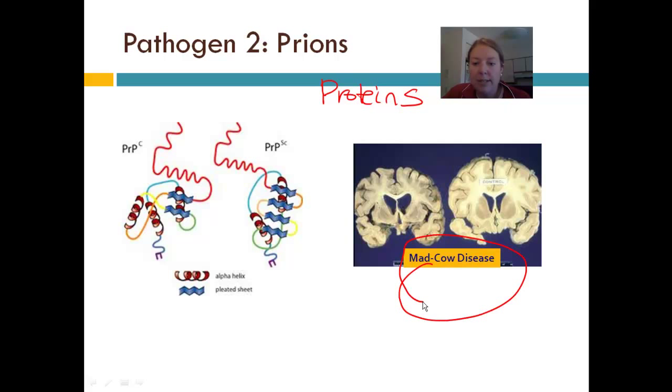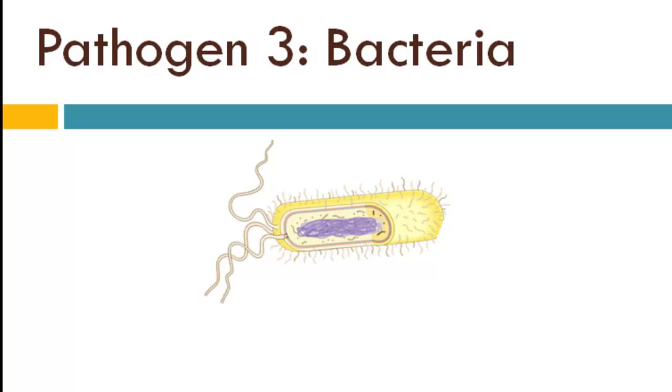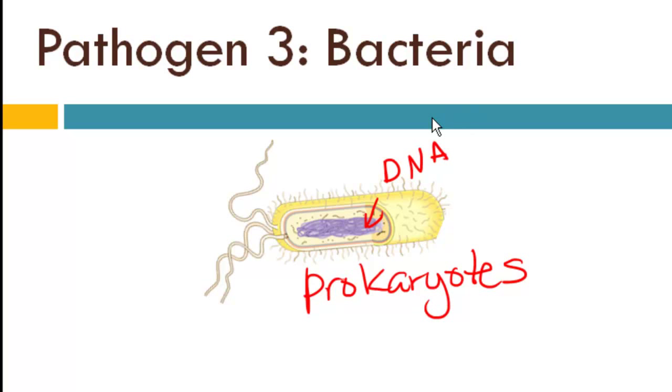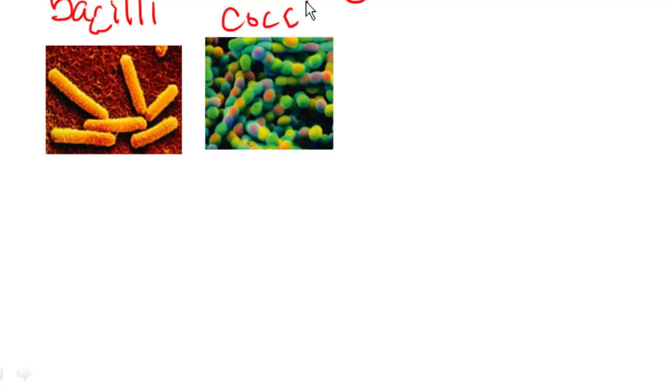The next pathogen we'll spend a little more time on is bacteria. Bacteria cells are classified as prokaryotes, which means they don't have any organelles — they don't have a nucleus to house their DNA. They do have DNA, it's just not enclosed in the safety of a nucleus. We can classify bacteria based on shape: rod-shaped called bacilli, circular-shaped called cocci, or spiral-shaped called spirilla.